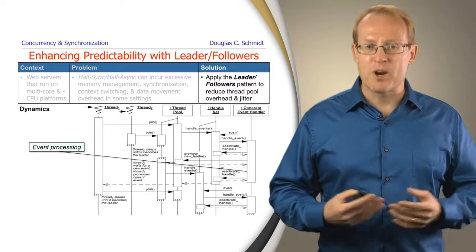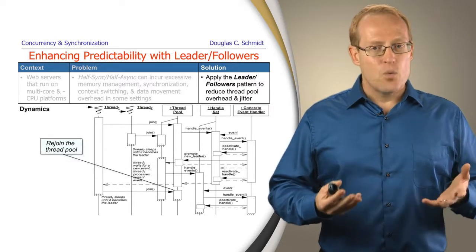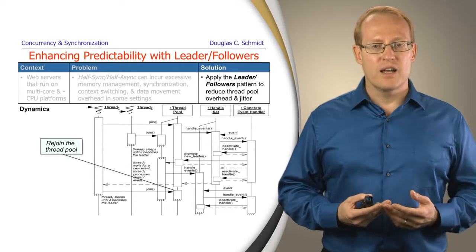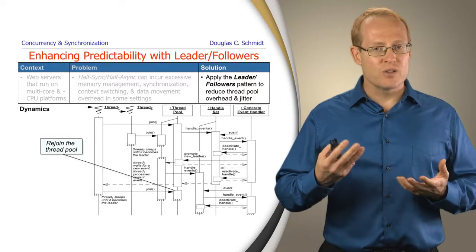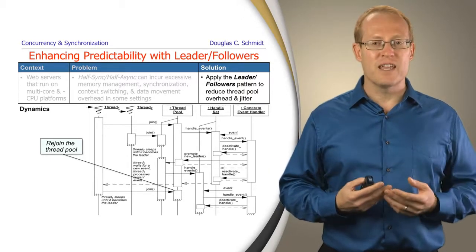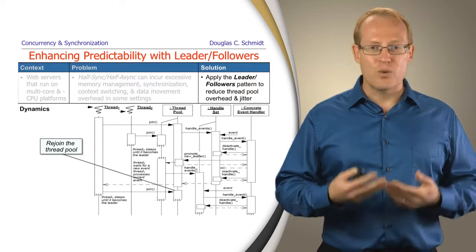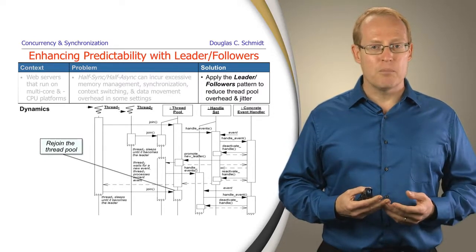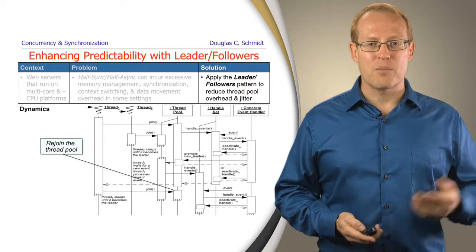So we don't have those issues of dynamic memory allocation, and there's far less synchronization overhead and context switching and data movement compared to half-sync/half-async. When the processing thread finishes, it typically goes back to being a follower thread to wait for its turn to become the leader. In some implementations, threads that finish processing actually become the new leader thread directly — that's a way to enhance cache affinity and thread affinity so you keep things warmer and moving faster. This also supports a LIFO style model with the leader-followers pattern, since threads don't care what order they wait in to do their work.